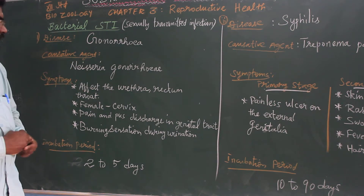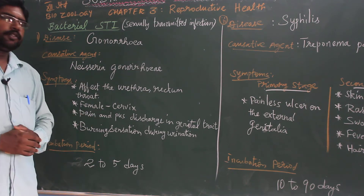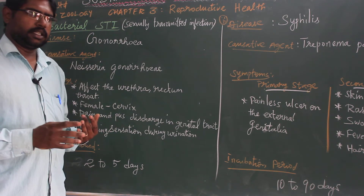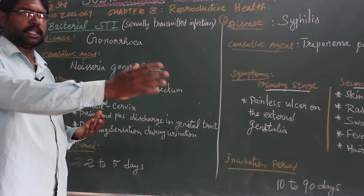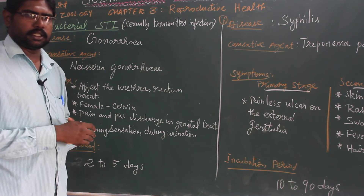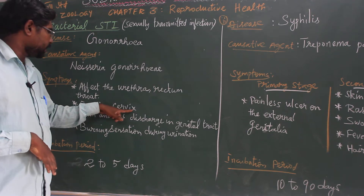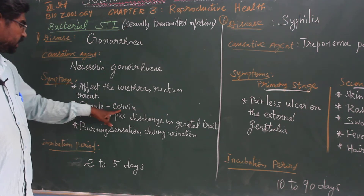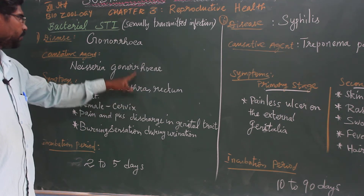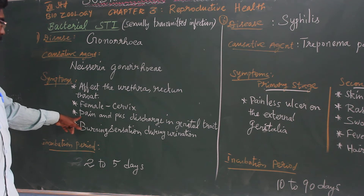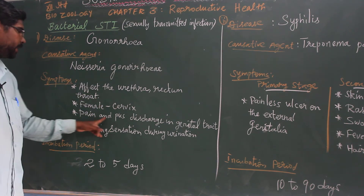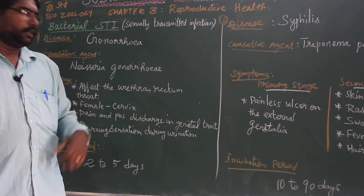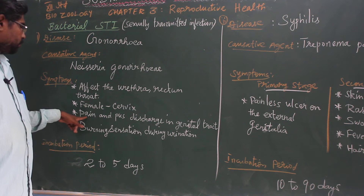The throat region is also affected by Neisseria gonorrhoeae. For females, the cervix is affected — the cervix is the part connecting the vagina to the uterus — and that is the pathway in females. Both female and male experience pain and pus discharge in the genital tract.